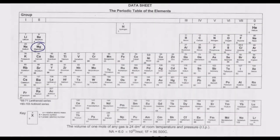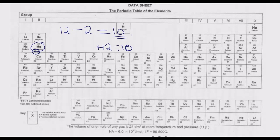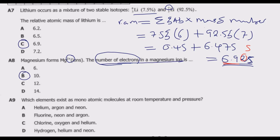Magnesium is here on the periodic table. Its proton number is 12. Since it has a 2+ charge, it has lost 2 electrons, leaving it with 10 electrons. That means we have 10 negative charges and 12 positive charges, giving a net charge of +2. So the number of electrons is 10, which is answer B. Note: if an atom gains electrons it becomes negatively charged; if it loses electrons, as metals typically do, it becomes positively charged.